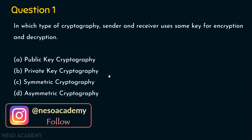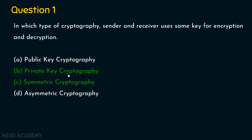The right answer for this question is option B and option C. Private key cryptography means there will be only one key, and this key is going to be used by both the sender and the receiver. If the same key is used for both encryption and decryption, we call such a technique private key cryptography or symmetric cryptography. If sender uses a different key and receiver uses a different key, then it will be public key cryptography or asymmetric cryptography.